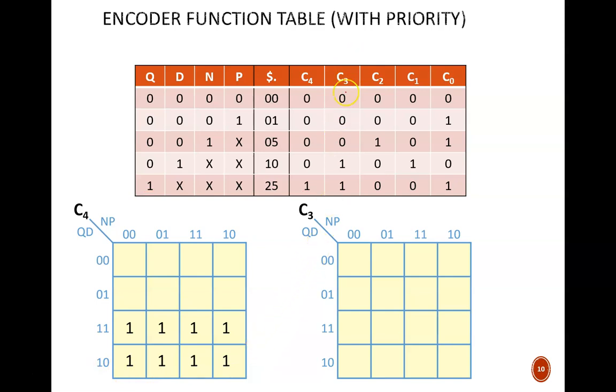Now for the C3 map. This 1 in the bottom row matches what we just saw for C4. Any time Q is high, then C3 is high. So, 1s fill out the entire bottom half.